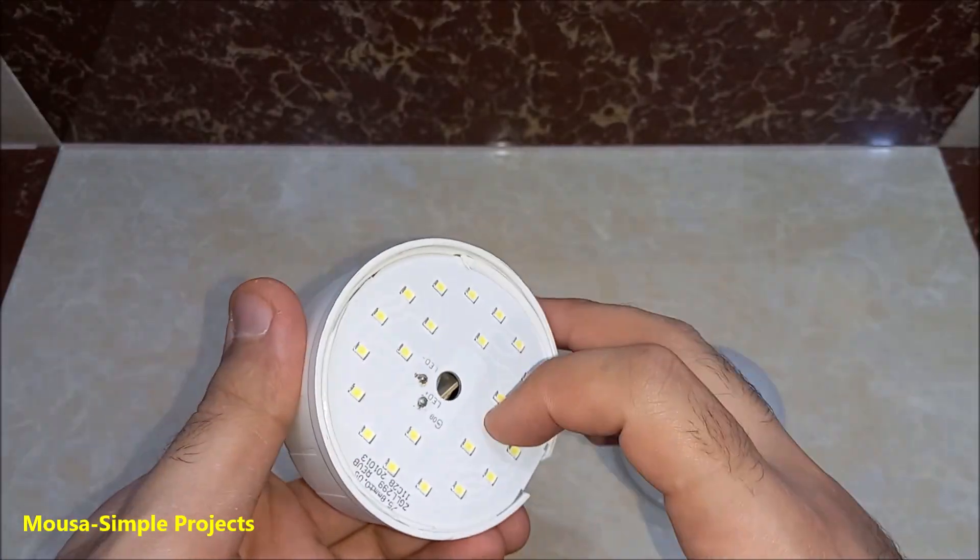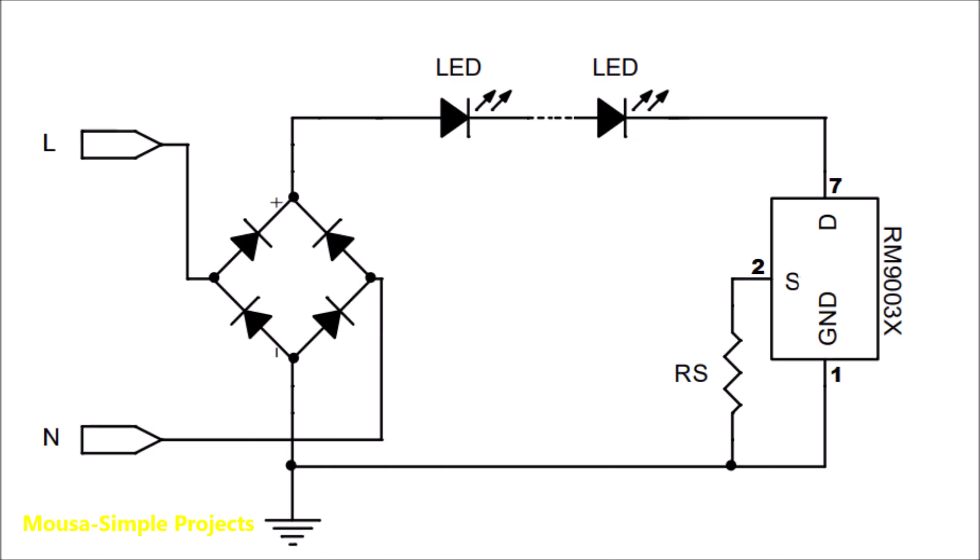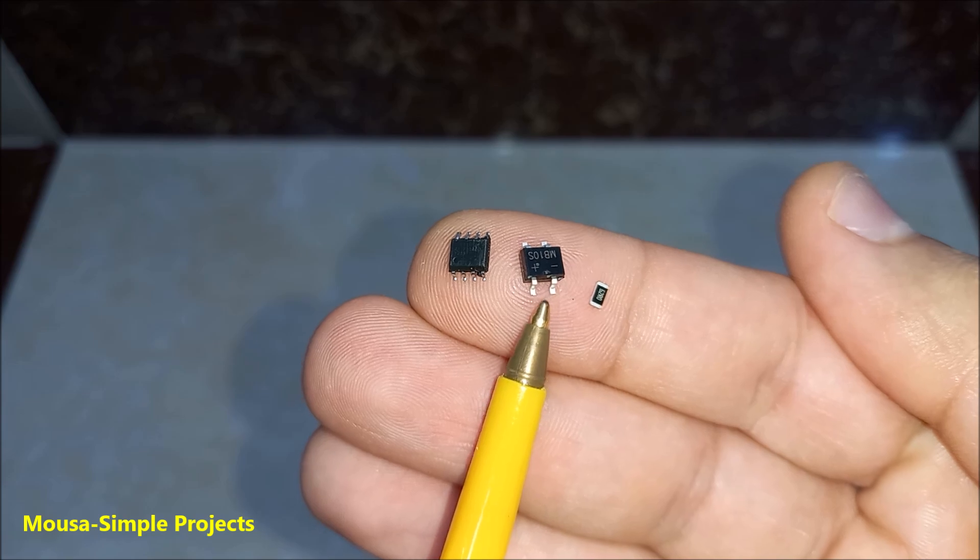Light bulbs usually have a complex electronic circuit inside as an LED driver, but I found this circuit that has only three components: resistor, bridge rectifier, and IC.